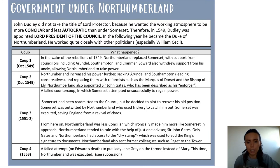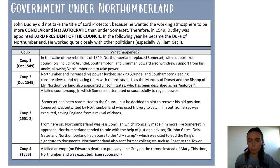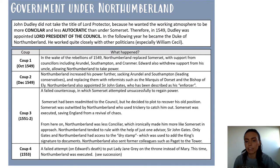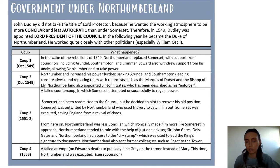Coup number two is where Northumberland increases his power further by sacking conservatives. By conservative, we mean religiously conservative individuals such as Arundel and Southampton. These were replaced with reformists such as the Marquess of Dorset and the Bishop of Ely.